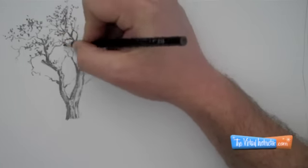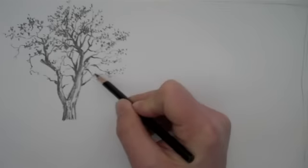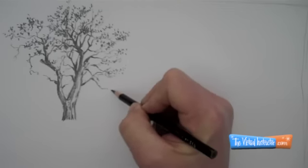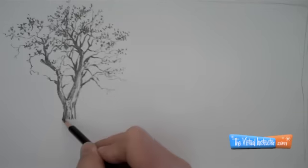And the same thing is true with the leaves. You need to have a dark side and a light side. So as you can see, as this tree is starting to develop, I've defined a light side of the tree and a dark side of the tree, and progressively I'm adding more and more leaves.